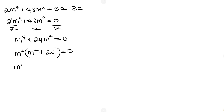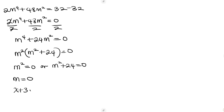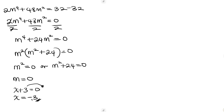We have two cases: m squared equals 0, or m squared plus 24 equals 0. From the first case, m equals 0. Recalling that x plus 3 equals m, substituting 0 for m gives x plus 3 equals 0, so x equals negative 3.